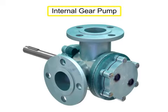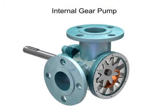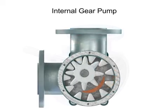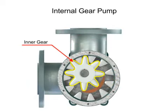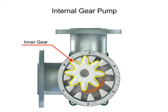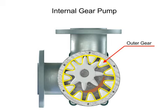Internal gear pumps are exceptionally versatile. This type of pump has one inner gear inside a second outer gear. The inner gear has a shaft driven by a motor and has teeth that protrude outward, while the outer gear has teeth that protrude inward toward the center of the pump.